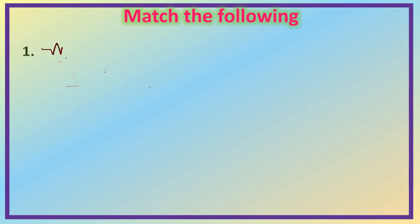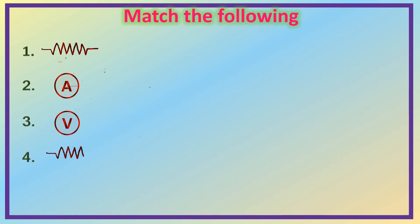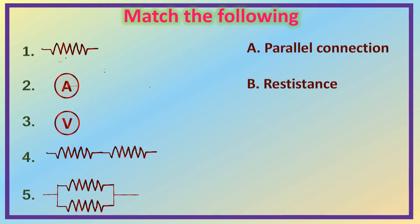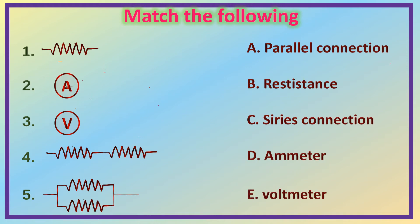Here is another interesting matching. The first symbol, second symbol — A in a circle, third symbol — V in a circle, fourth symbol, and fifth symbol. The options are: A: Parallel connection, B: Resistance, C: Series connection, D: Ammeter, and E: Voltmeter.